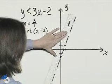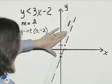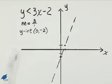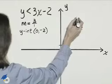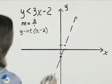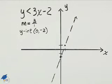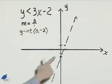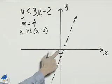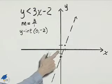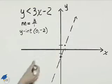Remember to cover the whole graph. Now we need to determine which part of the graph to shade. We can use the test point (0, 0) because it is not on that line.